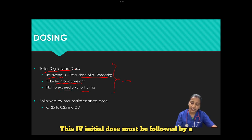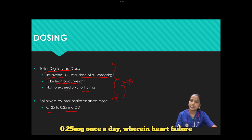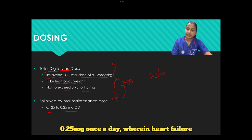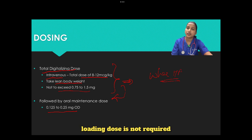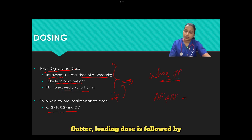This IV initial dose must be followed by an oral maintenance dose of 0.125 to 0.25 mg once a day. In heart failure, a loading dose is not required, whereas in atrial fibrillation and flutter, a loading dose is followed by a maintenance dose.